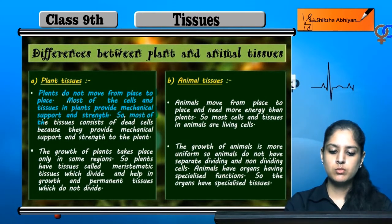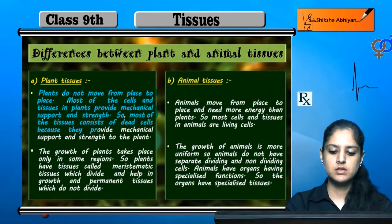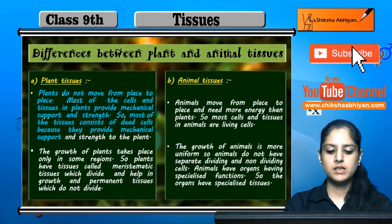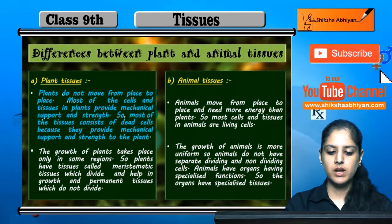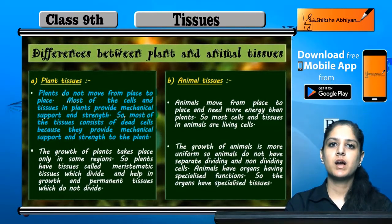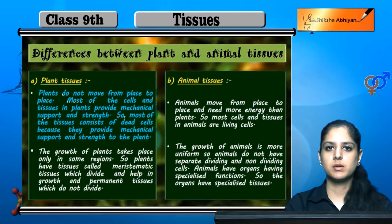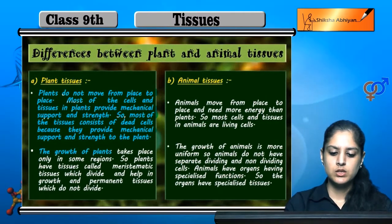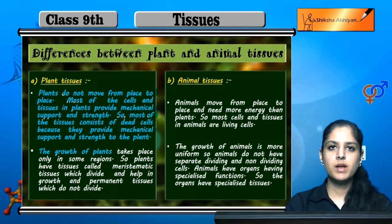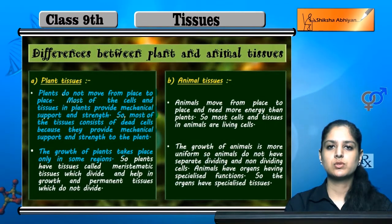Most plant tissues consist of dead cells because they provide mechanical support and strength to the plant. Plant tissues have dead cells which provide strength to the plant body, and growth of plants takes place only in some regions.